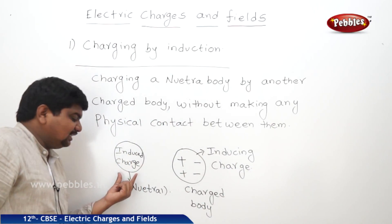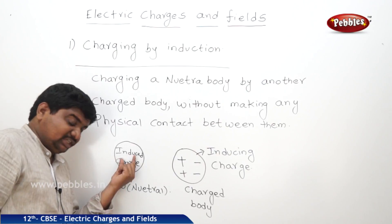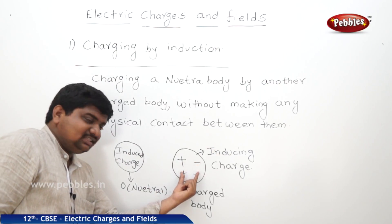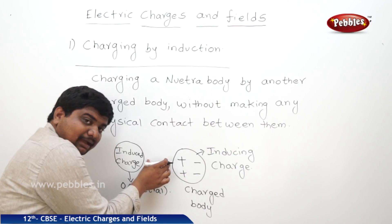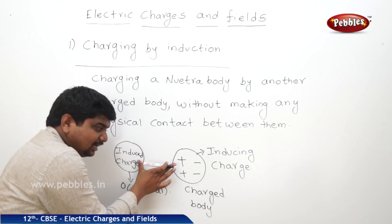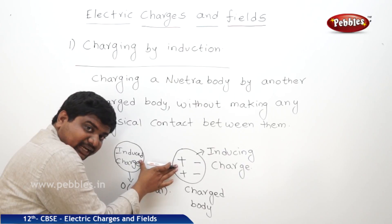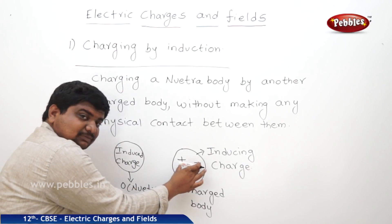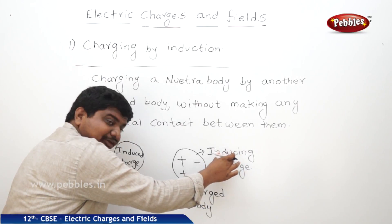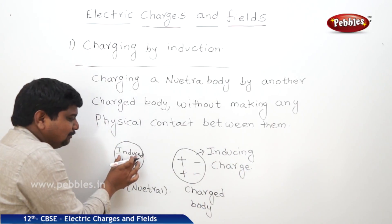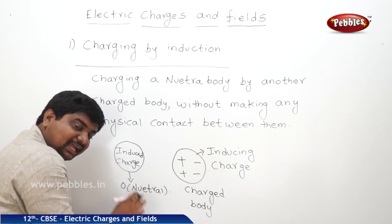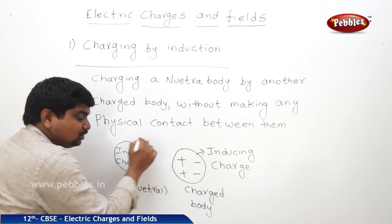The charge present in the charged body is called inducing charge. So, this is a neutral body and I want to charge it. I am placing a charged body at some gap, with no physical contact between the two bodies. The charge in the charged body is the inducing charge, and it produces an induced charge in the neutral body — that is how a neutral body can be charged.